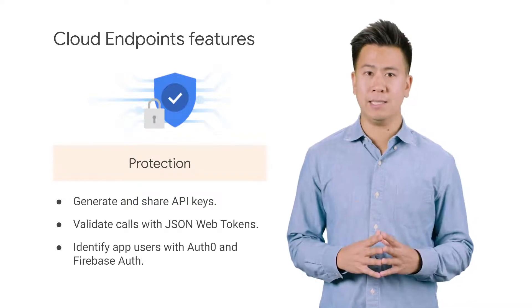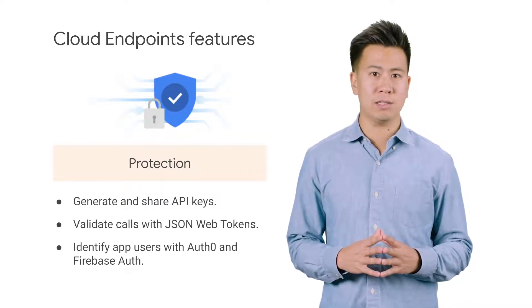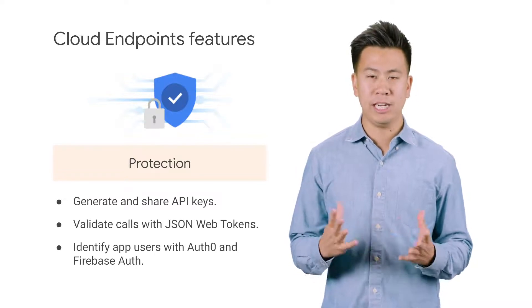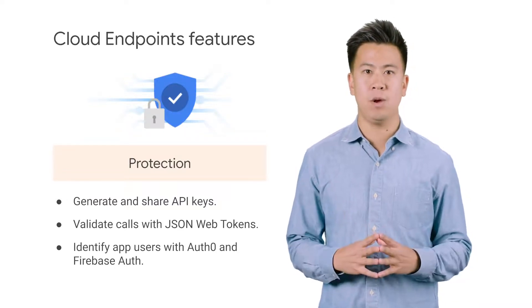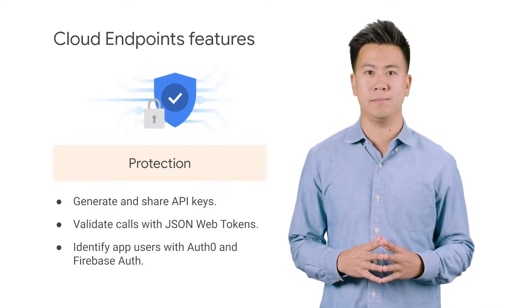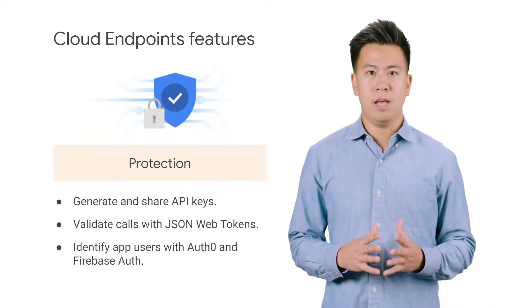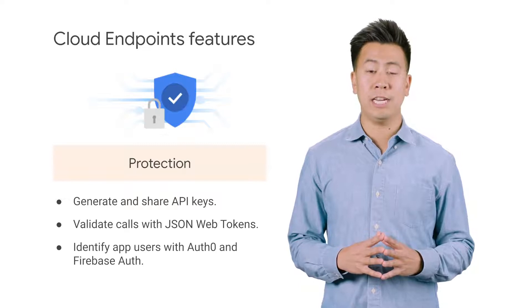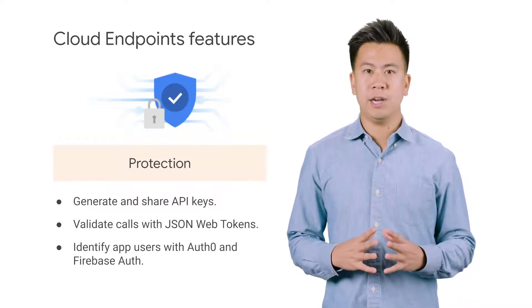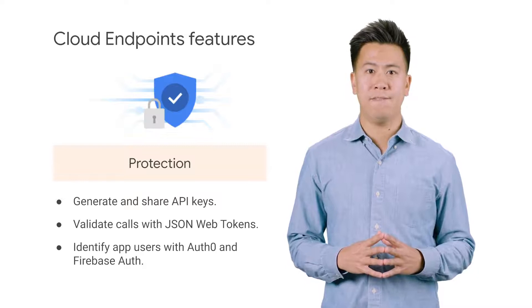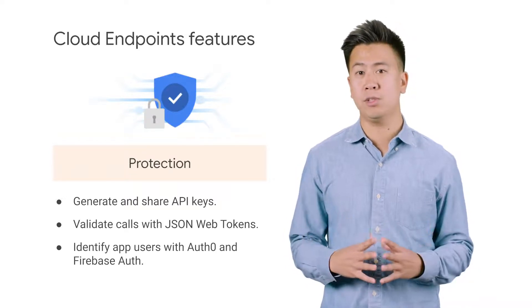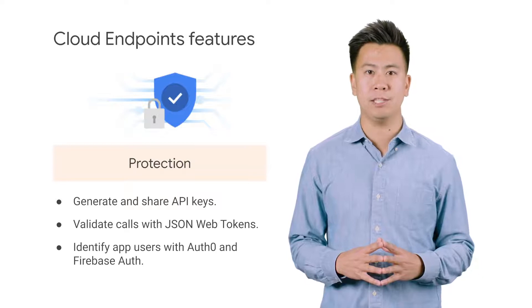You can generate API keys in the GCP console and validate on every API call, and share your API with other developers to allow them to generate their own keys. You can also validate calls with JSON web tokens. The integration with Auth0 and Firebase authentication allows you to identify the users of your web or mobile application.